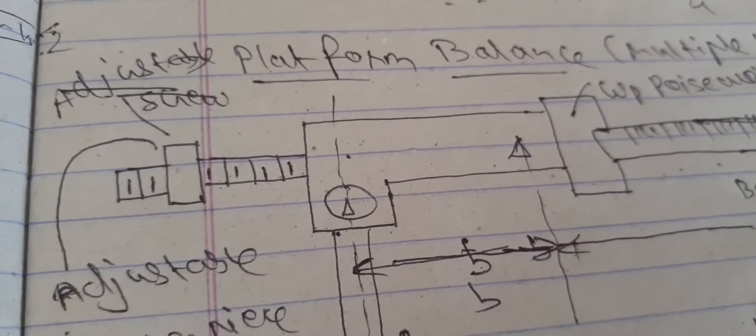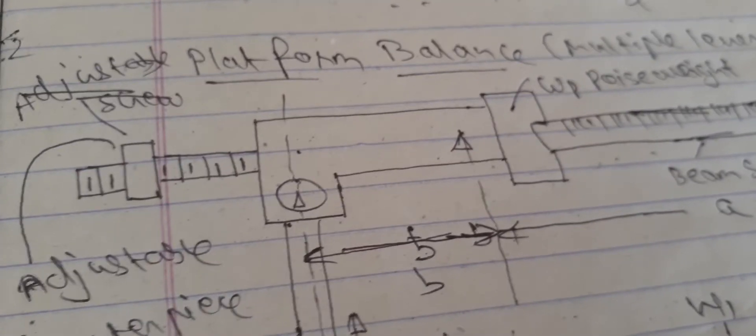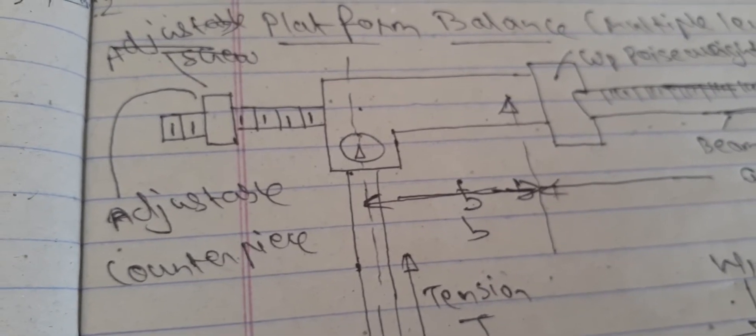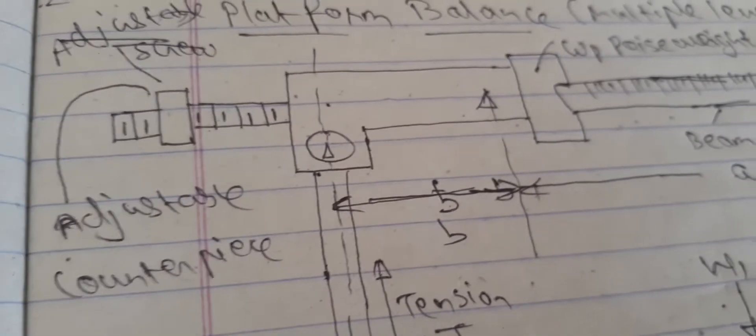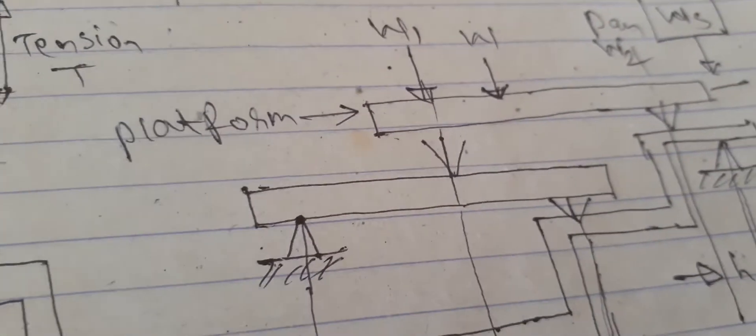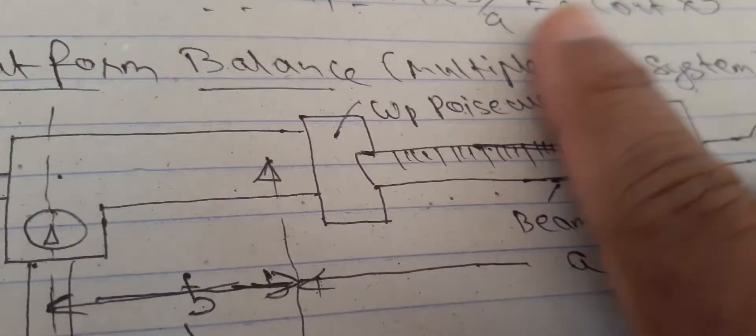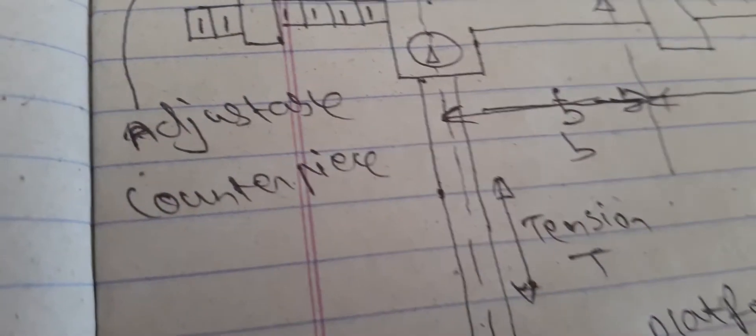Those are not suitable for measurements of large weights. When measurements of large weights are involved, multiple lever system which is shown in figure is used. In this system, the weight W is measured in terms of W suffix p poise weight and W suffix s weight of the pan.